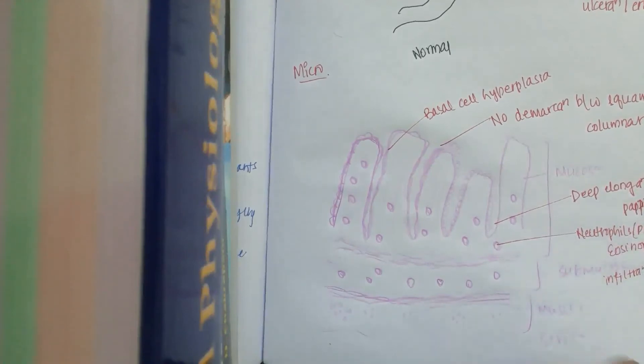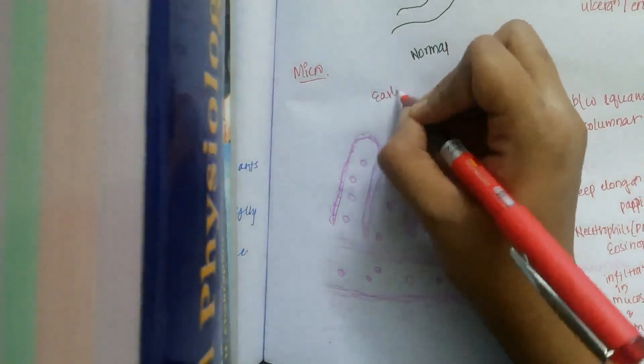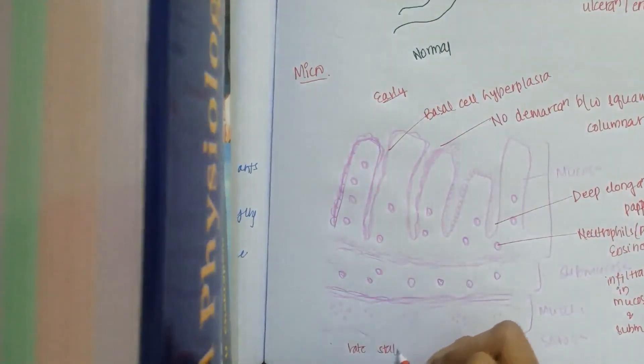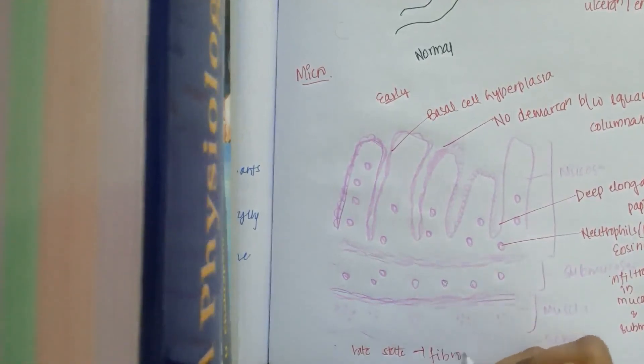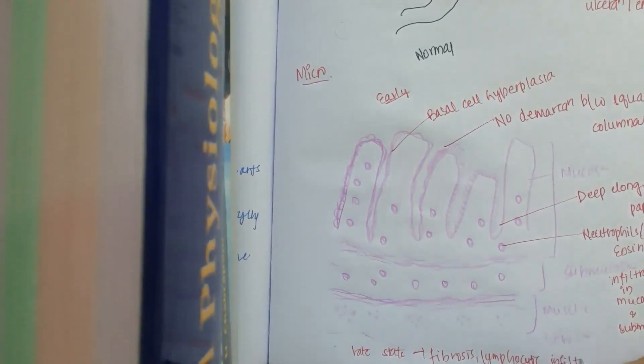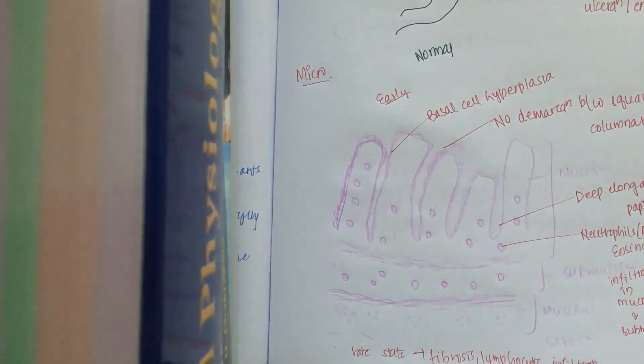If this is early stage, these are seen. If it's late stage, you can see fibrosis and lymphocytic infiltration. I'm not drawing this diagram but this is what you can see. In our next class we would deal about Barrett's esophagus, infectious esophagus, and other causes of esophagitis. Okay then, bye.